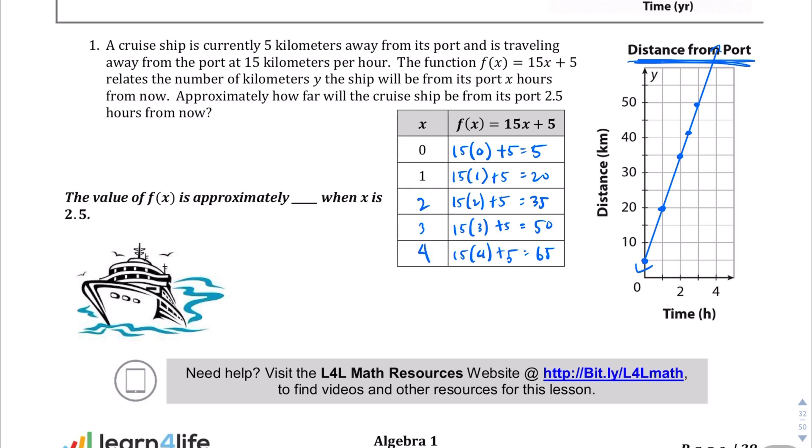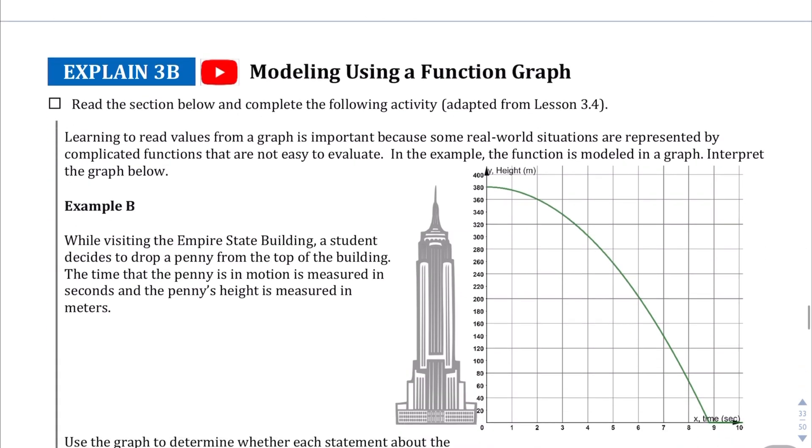So the value of f(x) is approximately... we're above 40 but not quite 45, so I'm going to say about 42. And if we punch in two and a half into the f(x) here, we actually end up getting 42 and a half. So the answer is the boat is about 42 and a half kilometers away when we're two and a half hours out.